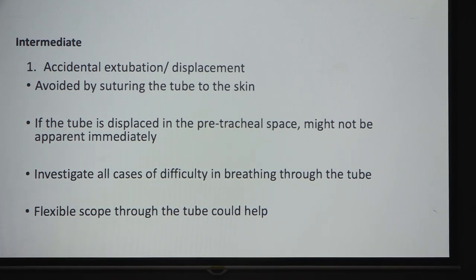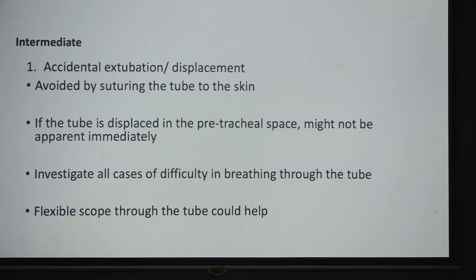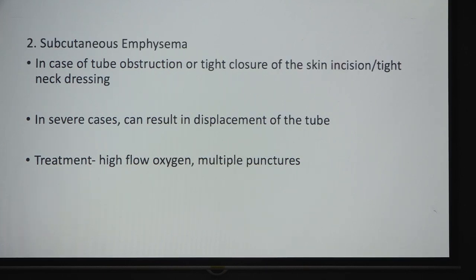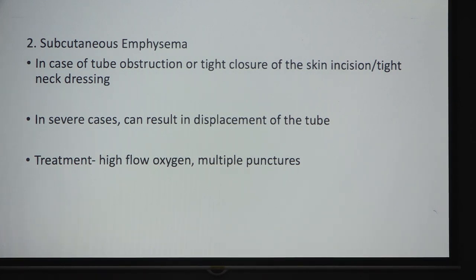Accidental displacement or extubation can be prevented by suturing the tube. If the tube is displaced to the pre-tracheal space, it may not be apparent immediately — passing a fiber optic scope through the tube will confirm tracheal position. Investigate all cases of difficulty breathing through the tube. Subcutaneous emphysema may result from tube obstruction, tight skin closure, or tight neck dressing. First, remove tight dressings and loosen ties; in severe cases, start high-flow oxygen and multiple punctures may be needed to express air from subcutaneous tissue.